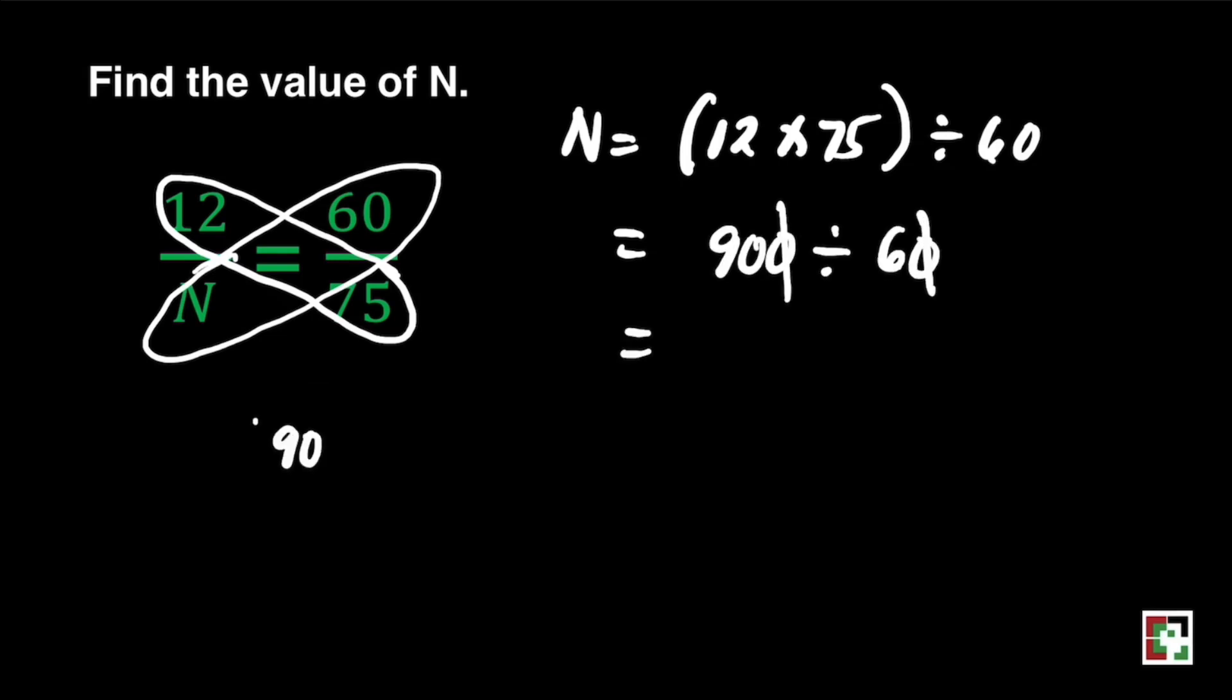900 divided by 60. We can do cancellation. We can cancel two zeros there. What's left is 90 divided by 6. Our answer is 15. n is equal to 15.